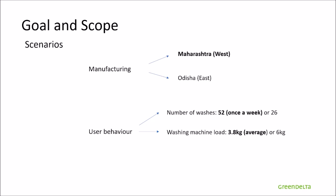Then we will be studying the load of the washing machine. Some studies found that German users filled the washing machine with 3.8 kilograms of clothes on average, but we will also evaluate the case where the machine is filled at its maximum load of 6 kilograms. Finally, we will study two cases for the type of drying: the base case where it is air dried and an additional scenario where it is tumble dried.